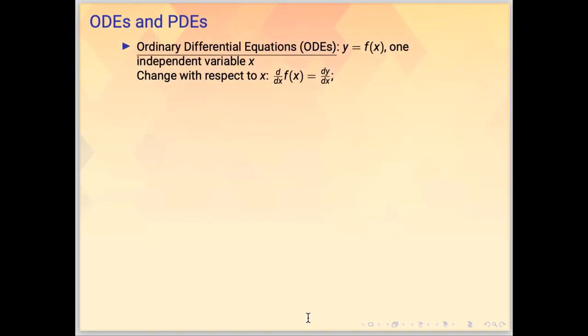Up to now, all you have seen are ordinary differential equations, which means that the function depends only on one independent variable. Then the change of, the rate of change of f can only be in the direction of x, that's why we write dy over dx. But usually in real life, modeling a function can depend on more than one variable.